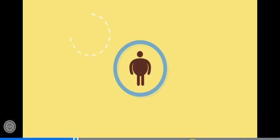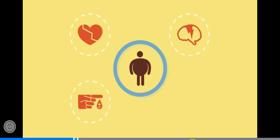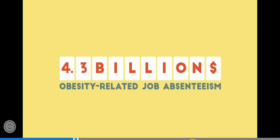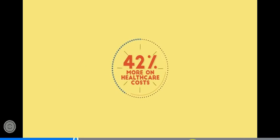Obesity-related conditions include heart disease, stroke, type 2 diabetes, and certain types of cancer. These are some of the leading causes of preventable death. The estimated annual healthcare costs of obesity-related illness are 190.2 billion, or nearly 21% of annual medical spending in the United States. Obesity-related job absenteeism costs 4.3 billion annually, and obese people spend 42% more on healthcare costs than healthy weight people.